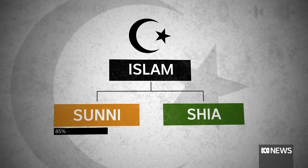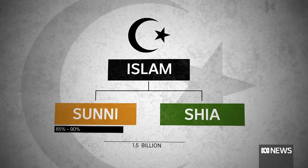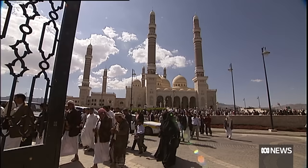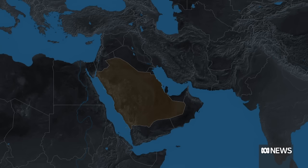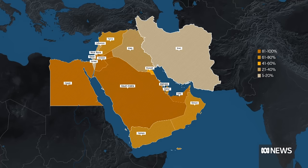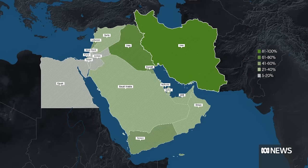Sunni Muslims are the majority. Estimates say they make up between 85 and 90% of the world's 1.5 billion followers of Islam. Shia Muslims make up around 10%, with population estimates between 154 million and 200 million. This map shows the percentage of Sunni Muslims in the Middle East, with the darkest colors having bigger Sunni populations, particularly in Saudi Arabia. Whereas this map shows the percentage of Shia Muslims in the region, with the darkest spots having the largest concentration of Shia Muslims, particularly in Iran.